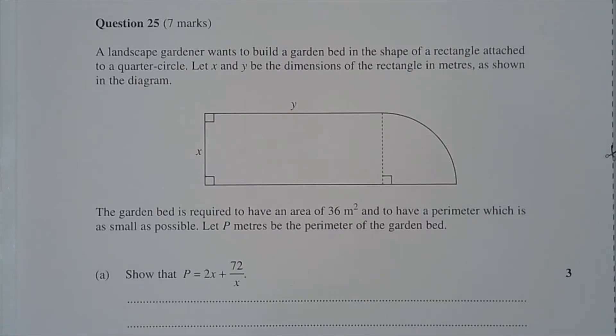Question 25. A landscape gardener wants to build a garden bed in the shape of a rectangle attached to a quarter circle. Let x and y be the dimensions of the rectangle in meters as shown in the diagram.